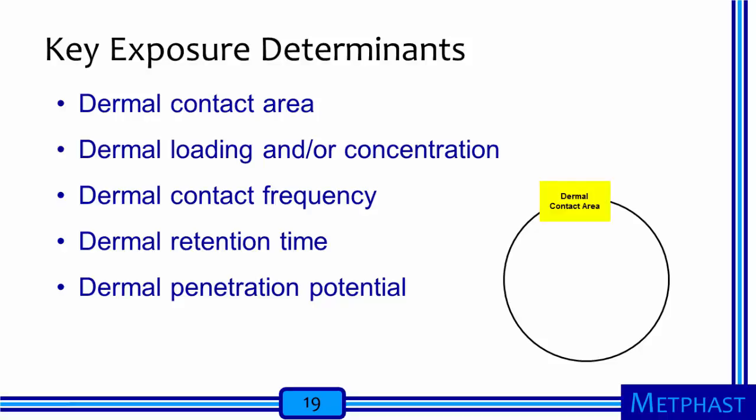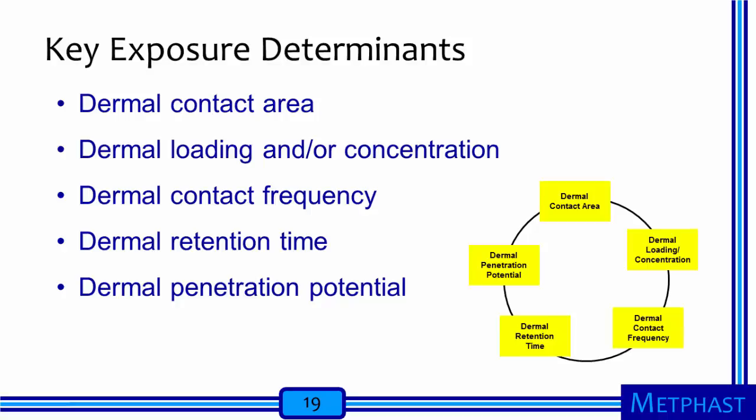Key exposure determinants include: the dermal contact area — how much of the skin is contacted; the dermal loading or concentration — how much of the agent of concern is in the material contacting the skin; the dermal contact frequency — the percentage of the workday over which exposure occurs or the number of repeated contacts; the dermal retention time — whether the agent stays on the skin; and dermal penetration potential — the ability of an agent to pass through the skin. All of these factors contribute to the overall dermal exposure potential, and none is more important than the others.